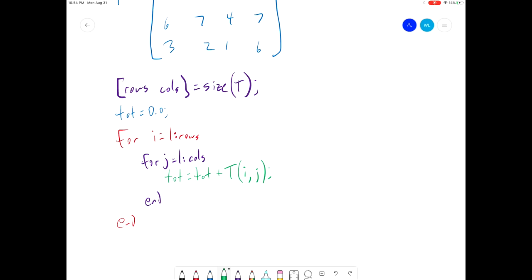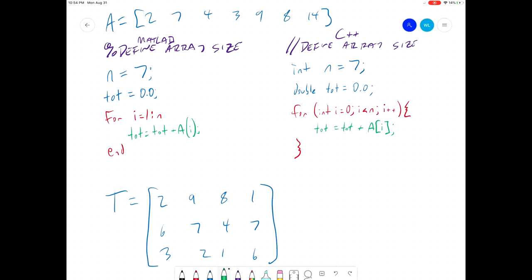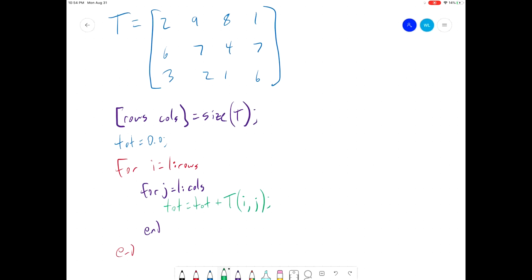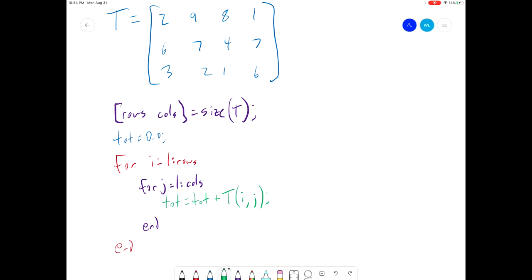And once we add that for loop we also need to include both array indices in our total accumulation here. So the difference here between the sum of our vector up here and the sum of our two-dimensional array here is we have one extra for loop in the two-dimensional array and we have one additional array index in our calculation of the total.